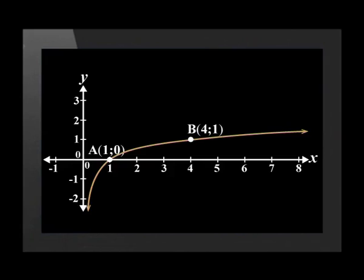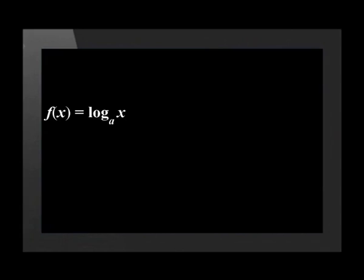Now let's try to find the equation of a plotted logarithmic function. This logarithmic function has plotted points: point a at (1, 0) and point b at (4, 1). The graph is increasing, so the base is greater than 1, and the asymptote is at x = 0. So let's start with the basic formula: f(x) = log_a(x).